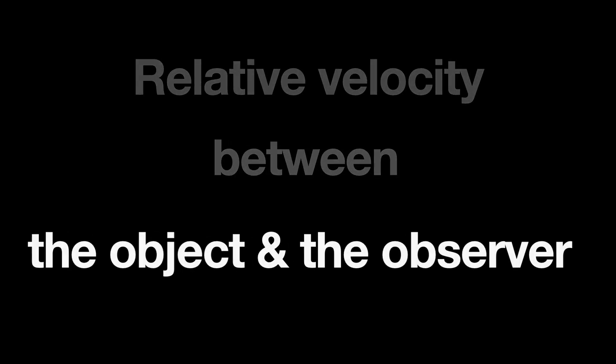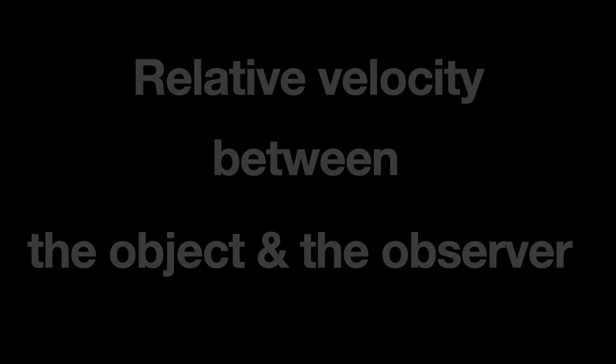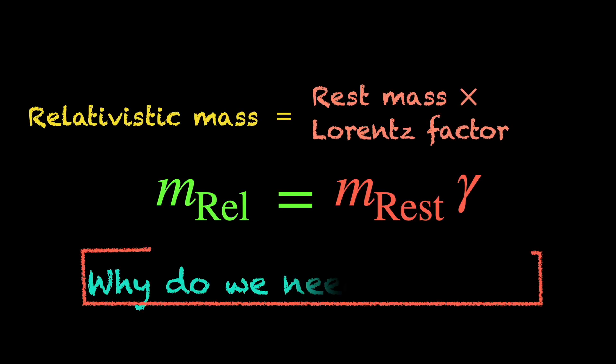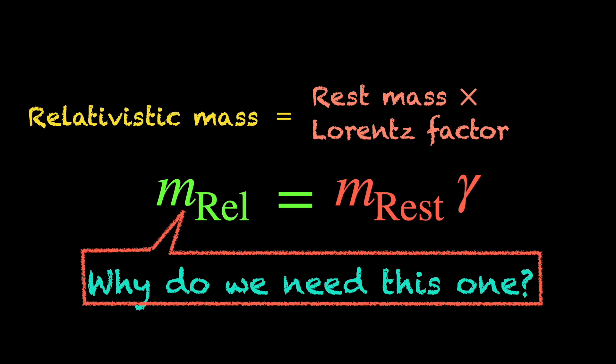The best way to avoid any confusion is to state that it is the relative velocity between the object whose mass is to be measured and the observer who carries out the measurement. Ok fine, but why do we need the relativistic mass? Under what scenario really?